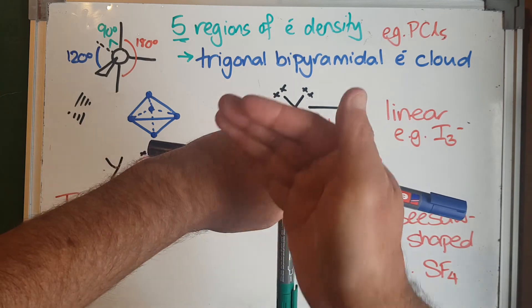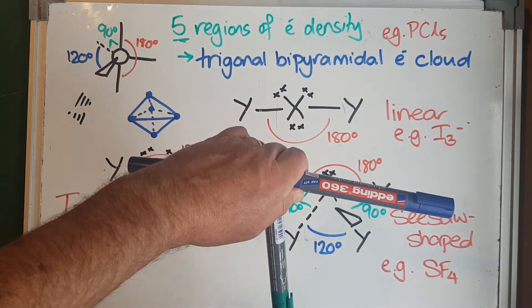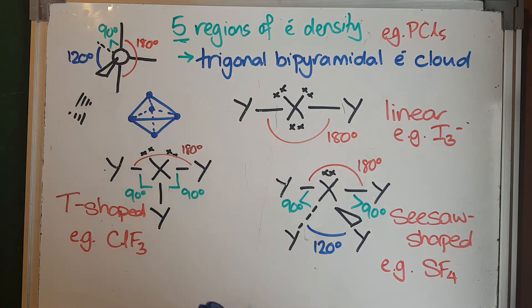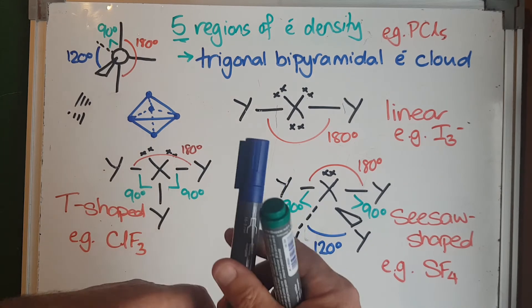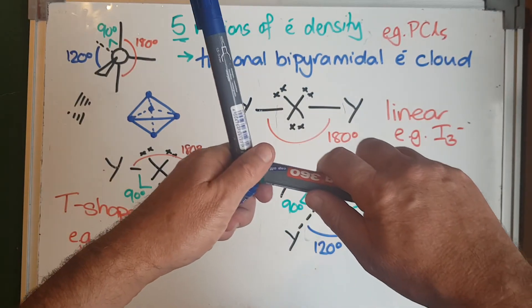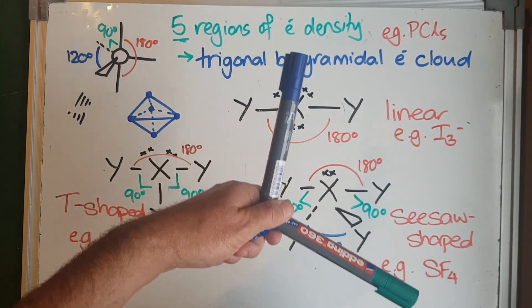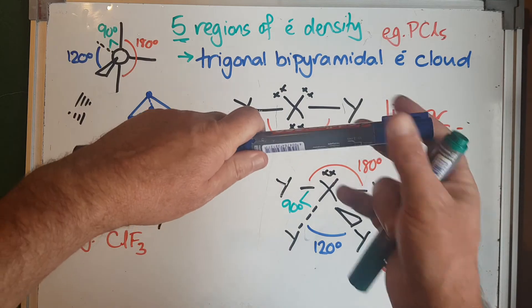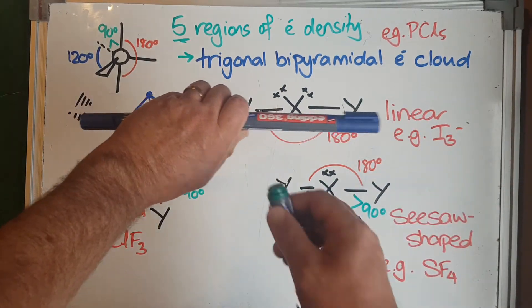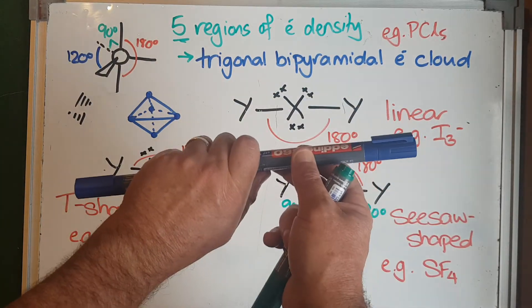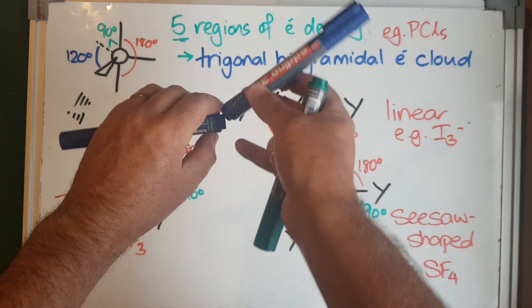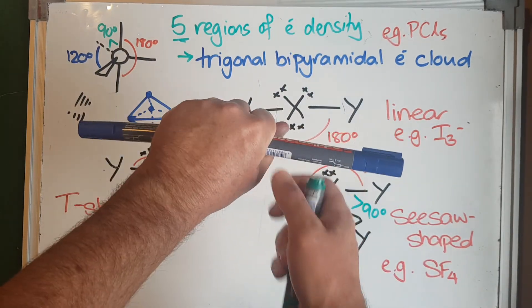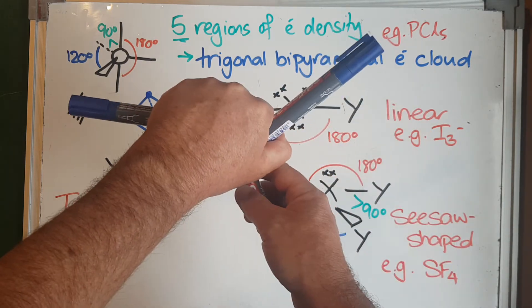You might think, 'Wouldn't it be better to have everything at 120?' Well, maybe, but actually 180 degrees is a bigger angle than 120, so that's why this happens for repulsion. These two can get 180 degrees away from each other, which is a lot more stable than three things being 120 when there's lone pairs involved.